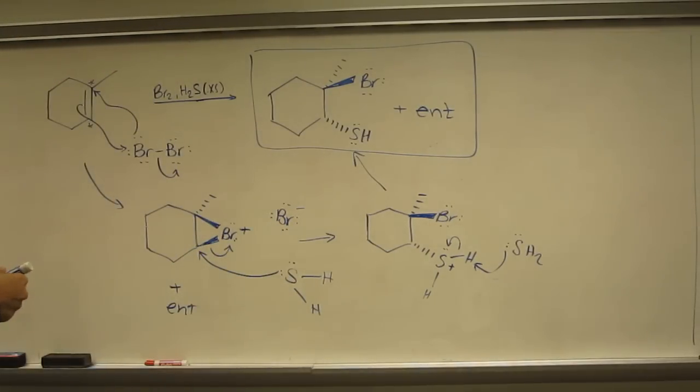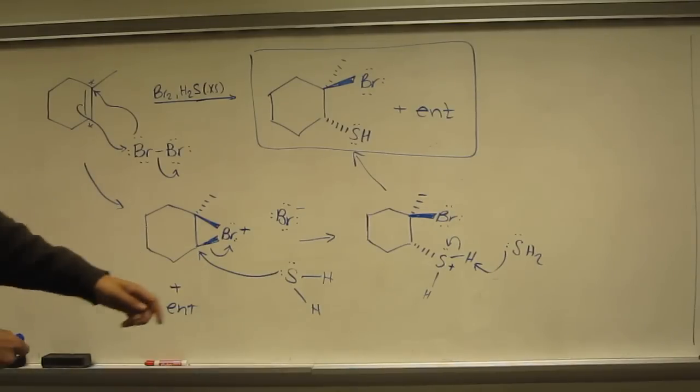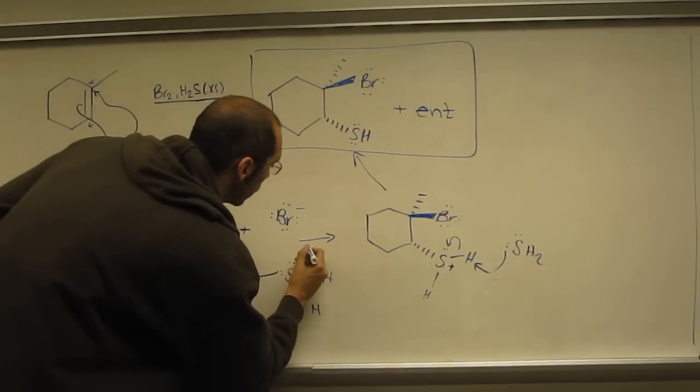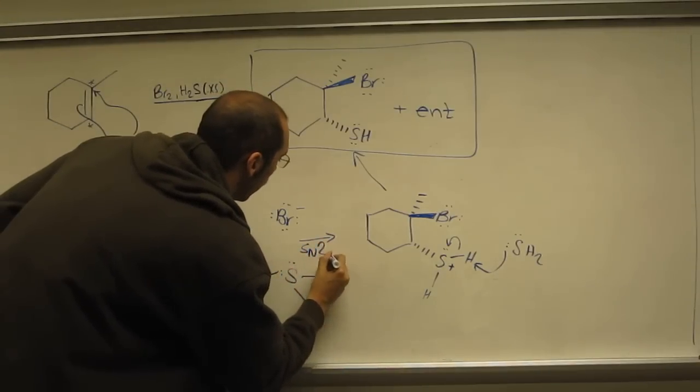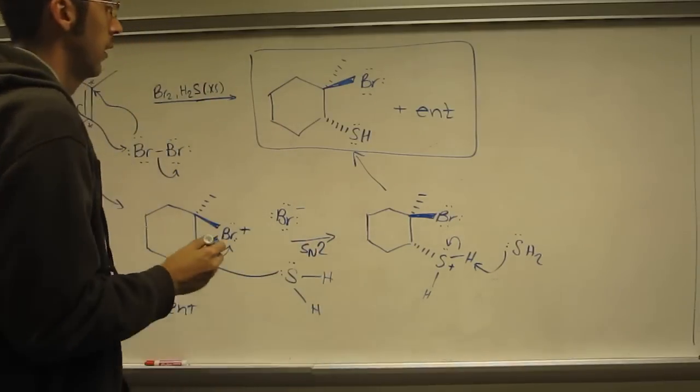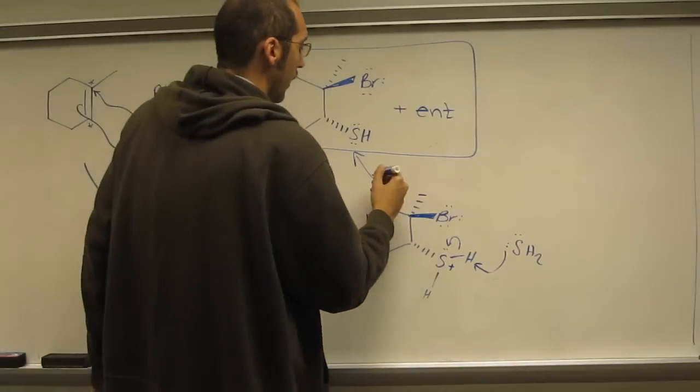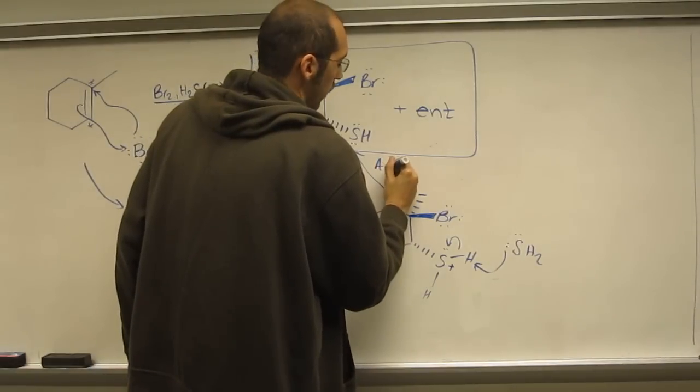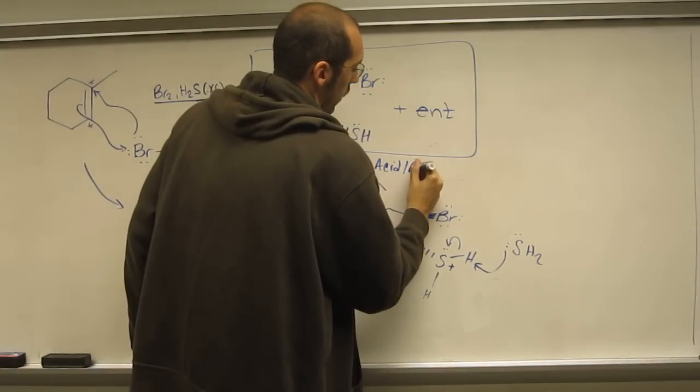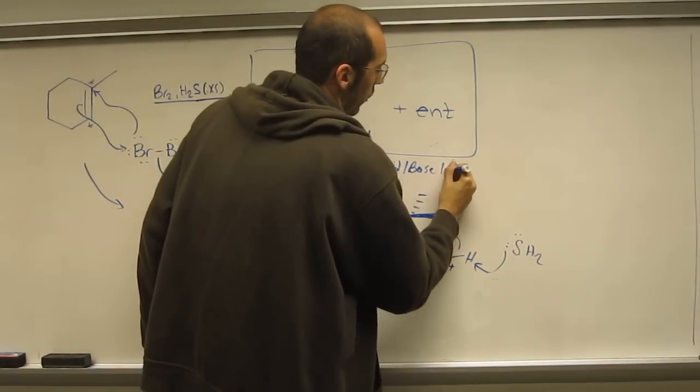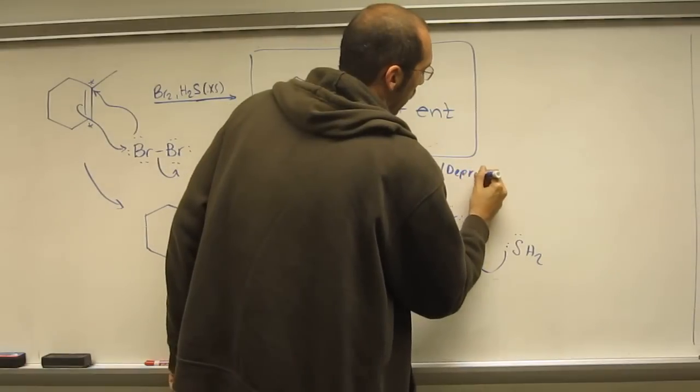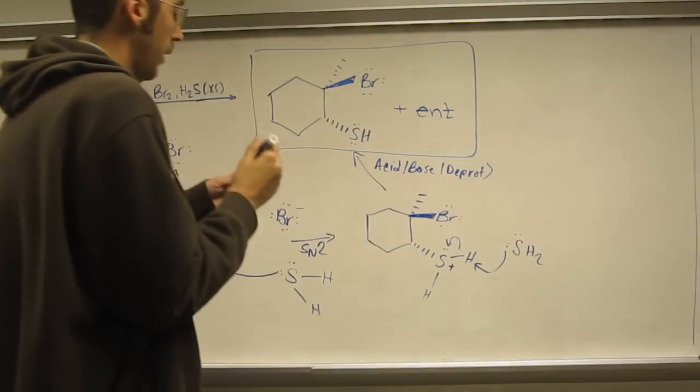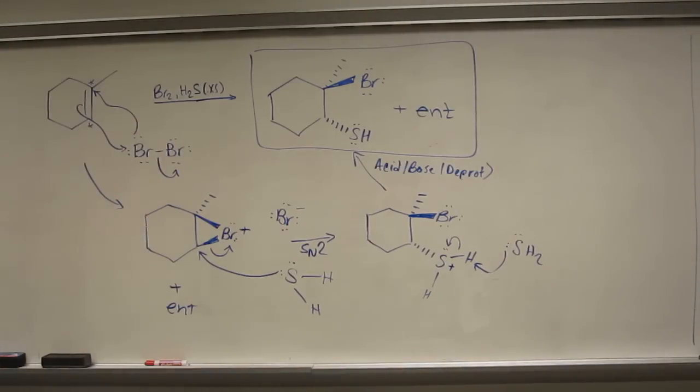So what do you have? You've got the making of the bromonium ion. The SN2 reaction here. And then the acid-base or deprotonation. Then we give you the final product.